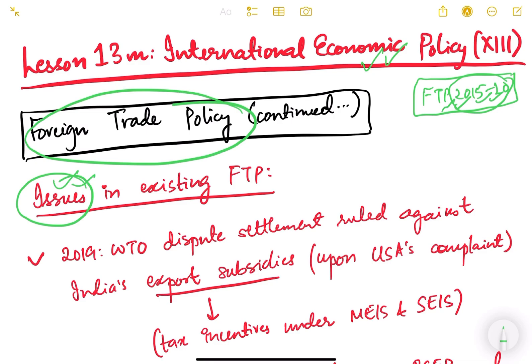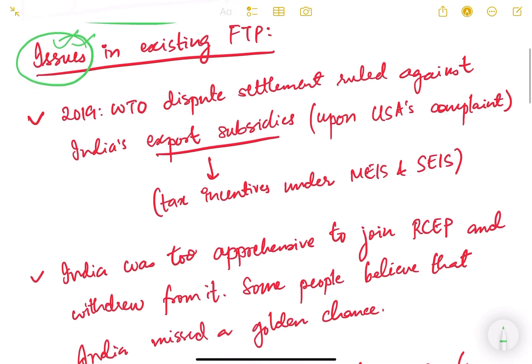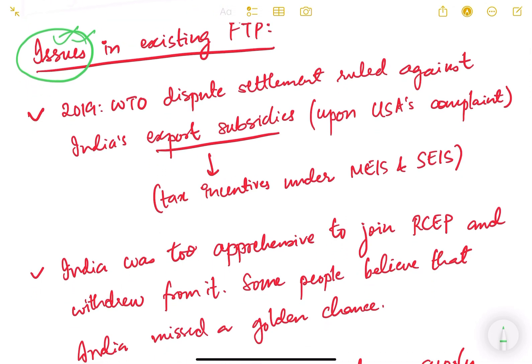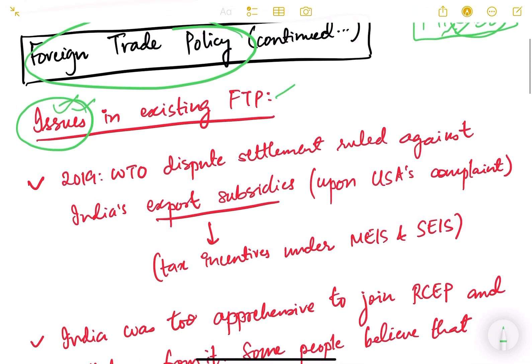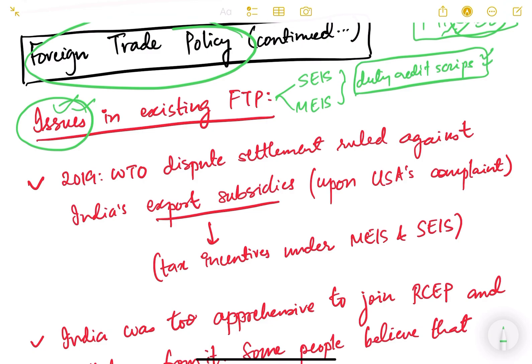Every policy has some loopholes, some drawbacks and shortcomings, and we need to understand them so that whenever we bring a new policy, we address these shortcomings. So let us study the existing issues in the Foreign Trade Policy 2015-20. First of all, in FTP 2015, there were two schemes — SEIS and MEIS — and the main thing was that the government granted duty credit scrips to the exporters. These were a kind of financial incentive, essentially an exemption from duty.